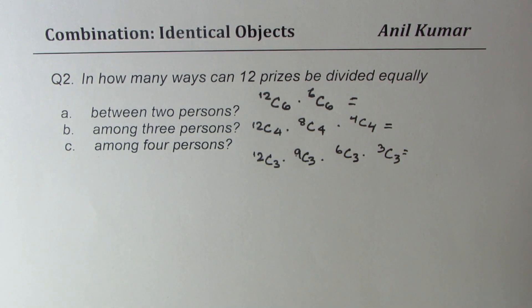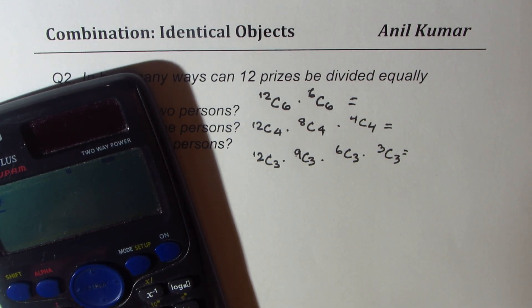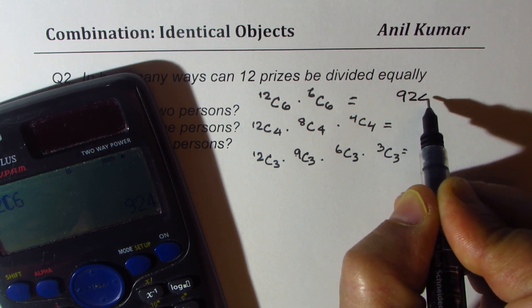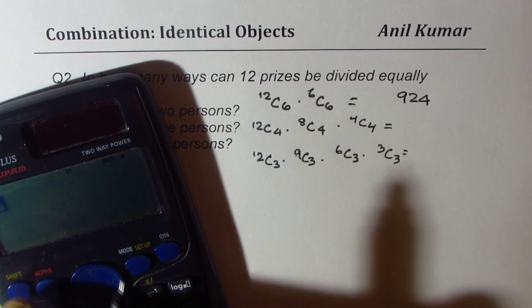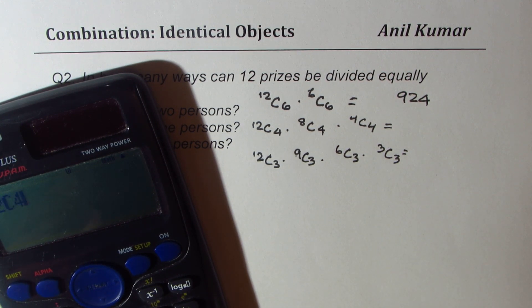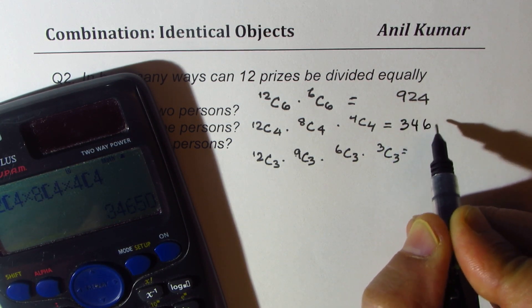Now, let's calculate the answer. So it is 12C6 for the first one, which is equal to 924. For the next one, it is 12C4 times 8C4, which is equal to 34,650.